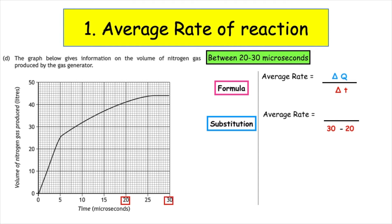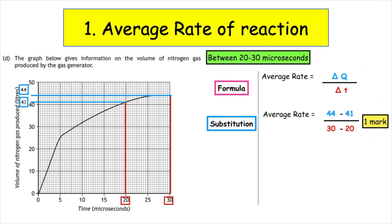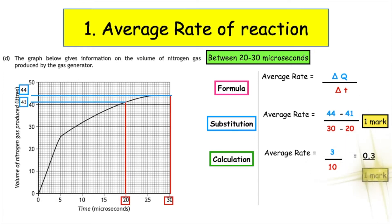We draw a line from the x-axis until we meet the curve, and extrapolate along to the y-axis. Looking at the volumes produced — each little box is worth one litre — we have 41 and 44. We finish the substitution: 44 minus 41, because we always take small numbers away from big numbers. That gives us 3 over 10, which is 0.3. Our units: quantity on the y-axis is litres, time on the x-axis is microseconds, so we rewrite that as litres microseconds to the minus 1.